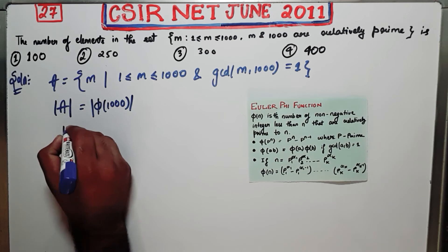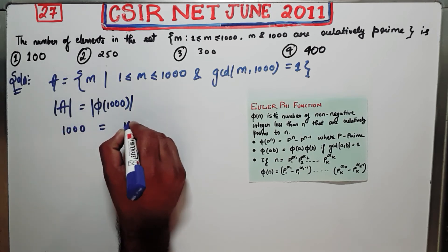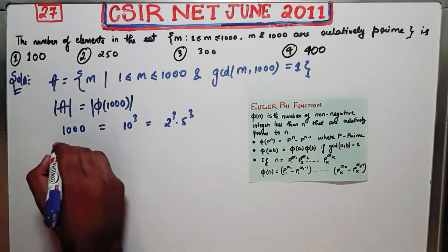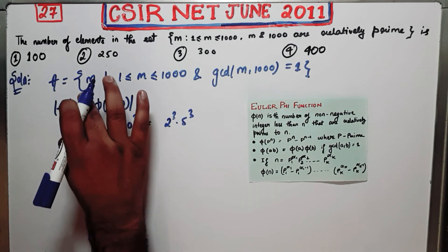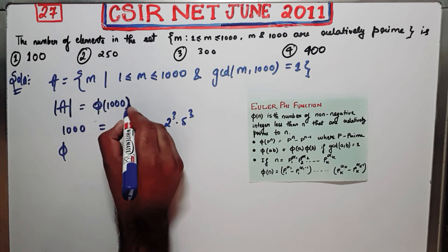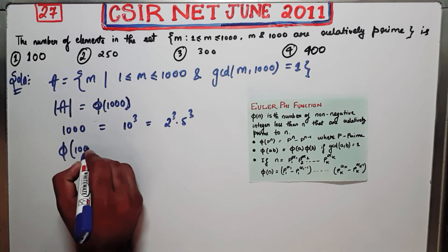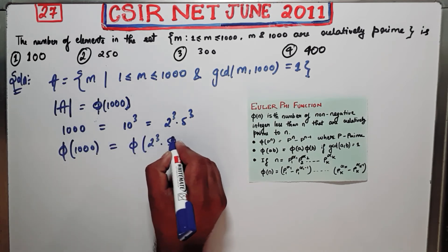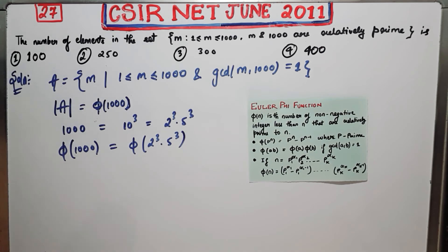Now see what is your number. Your number is 1000, that means 10 cube, that means 2 cube dot 5 cube. Now you have to calculate phi of 1000, so this thing will be phi of 2 cube dot 5 cube.